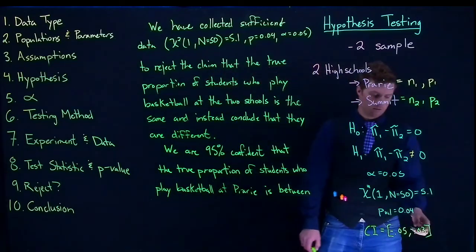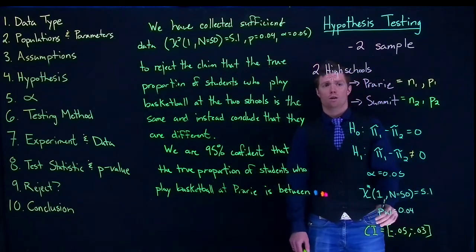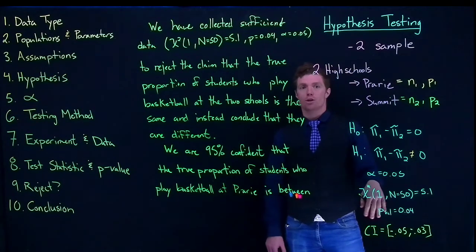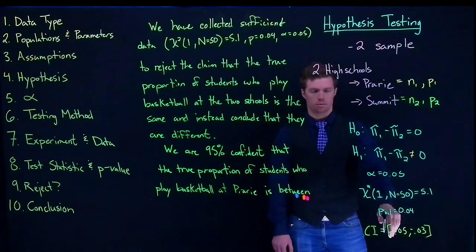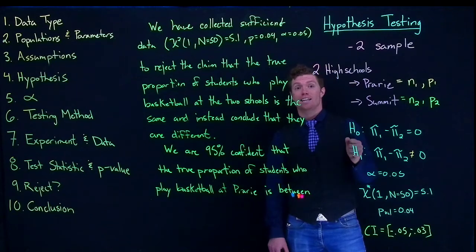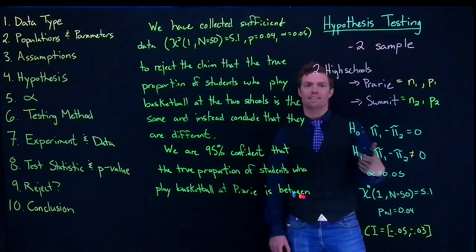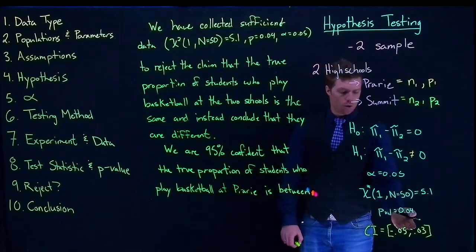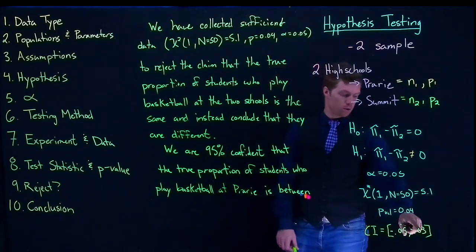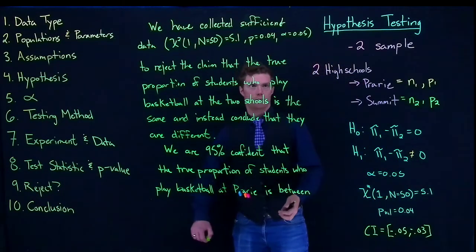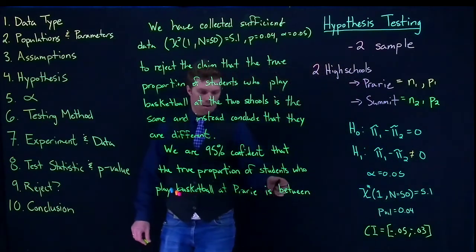So notice how these are negative symbols right here. Now you might be saying, whoa, wait a second, we thought we're dealing with proportions and probabilities—I thought we couldn't have a negative proportion. Now note here that it's not a negative proportion, it's how much smaller one proportion is than the other.